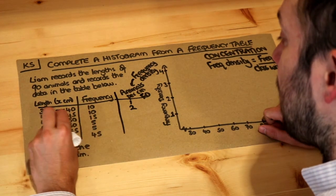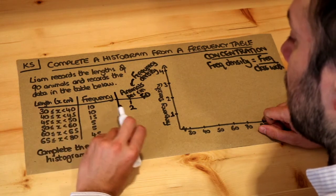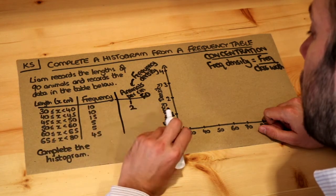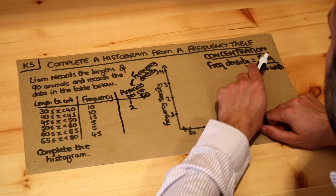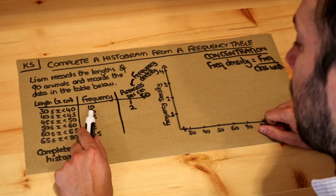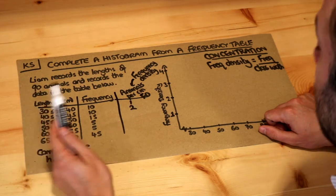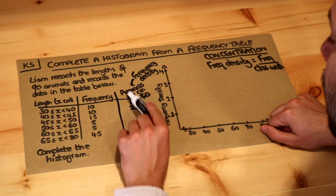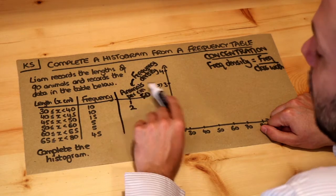The class width is basically how wide the interval is. Well between 30 and 40 that's 10. 10 divided by 10 is 1. And similarly in the second case, frequency divided by class width is 10 divided by a width of 5. 10 divided by 5 is 2. So this formula here just encapsulates what we did here just kind of intuitively.